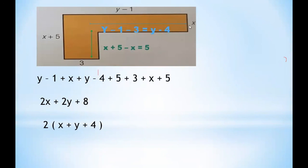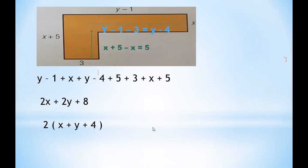Now add all sides for the perimeter: (y-1) + x + (y-4) + 5 + 3 + (x+5). Counting variables: 2x and 2y. Constants: minus 1, minus 4, plus 5, plus 3, plus 5 = 8. So the perimeter is 2x + 2y + 8. Since all terms are even, factor out 2: 2(x + y + 4). That is how you solve the perimeter of this L-shape figure. I hope you understand — thank you everyone, bye!